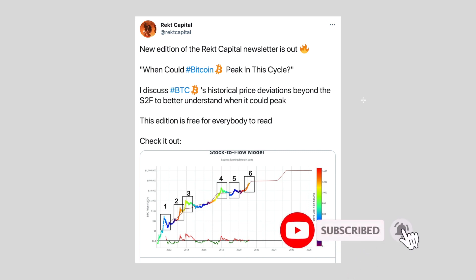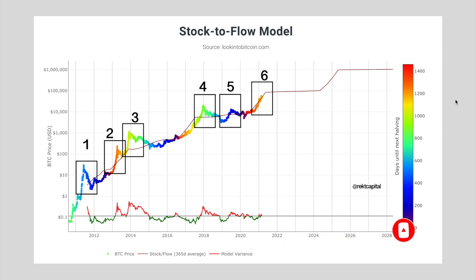If you haven't subscribed to the channel feel free to do so for more videos like this. One of the most important things to mention is that the stock to flow denotes scarcity — it's a fantastic model for outlining and predicting where Bitcoin's price action can go. The stock to flow line here is in the maroon colour, and it nicely outlines where Bitcoin could potentially go. Sometimes this line is ascending, sometimes it curves, and sometimes it gets entirely flat.